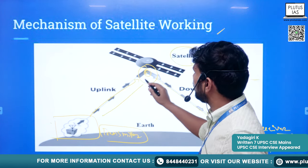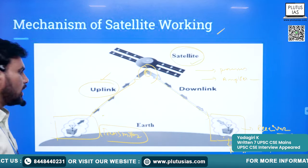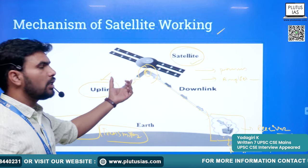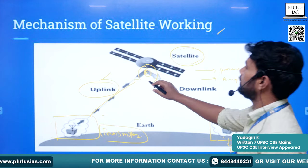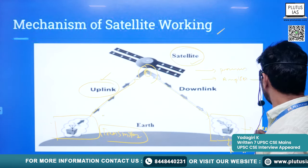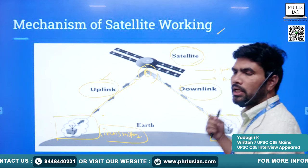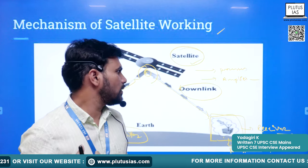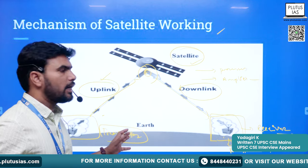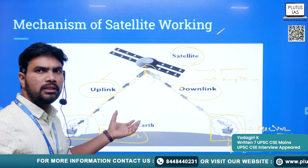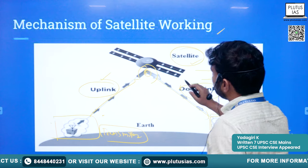The connection between the transmitter and the satellite is called the uplink. When information comes from the satellite to the receiver, it is known as the downlink. Try to remember this vocabulary. This is the general mechanism of working of a satellite.